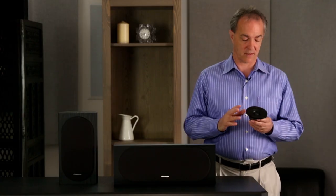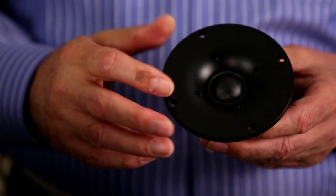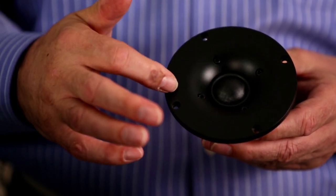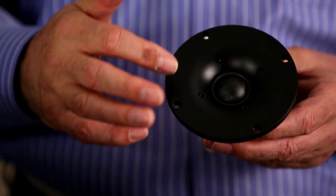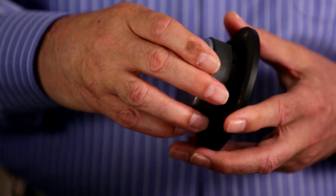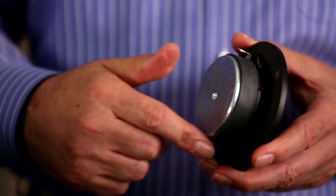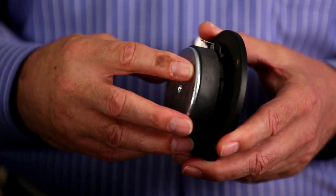For the tweeter, again, many changes. New dust dome material, new waveguide shape to get better off-axis performance and matching to the mid-range. And a much larger magnet. This gives us greatly improved sensitivity of the tweeter, so we don't get as much thermal compression at high volumes.